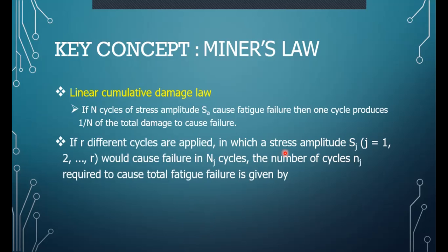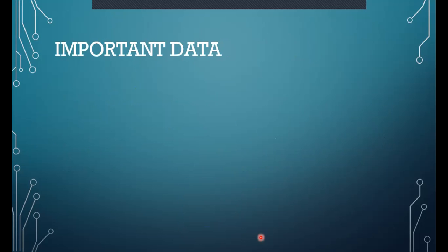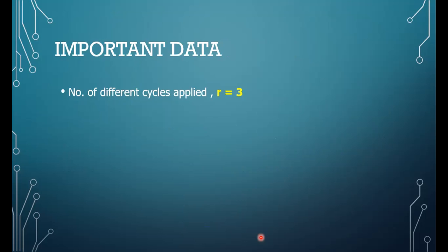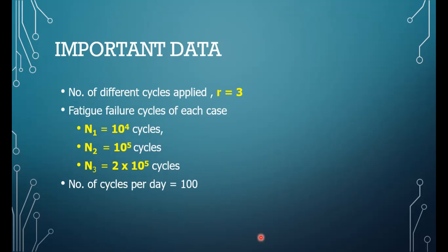In continuation of that, if different cycles are applied — different types of loads applied to the same component, marked from j equal to 1 to r — in every case we have N_j cycles at which it fails, and we require the small n_j cycles actually applied. So we have three different loading types: 160, 140, and 100 Newton per millimeter square. R becomes 3, fatigue failure cycles are 10^4, 10^5, and 2×10^5, and cycles per day is 100.